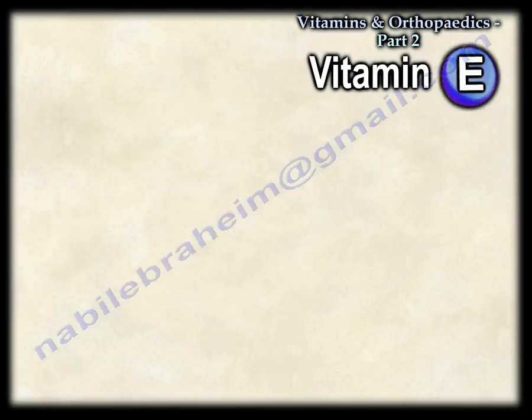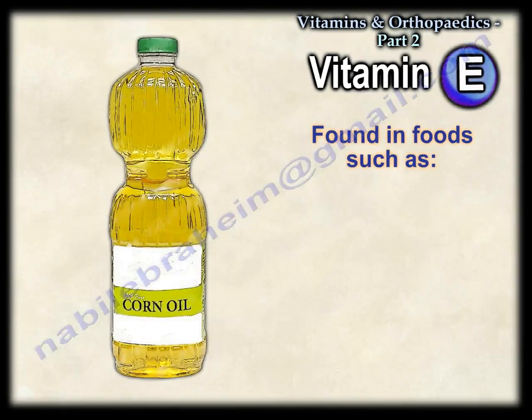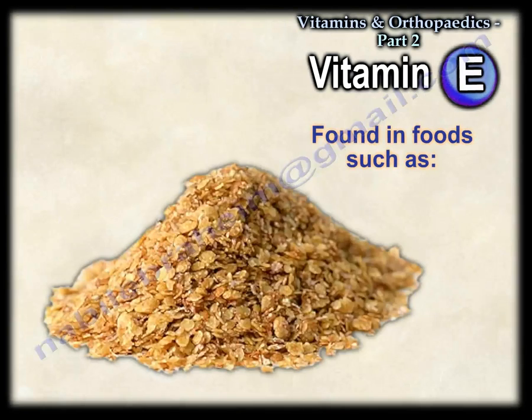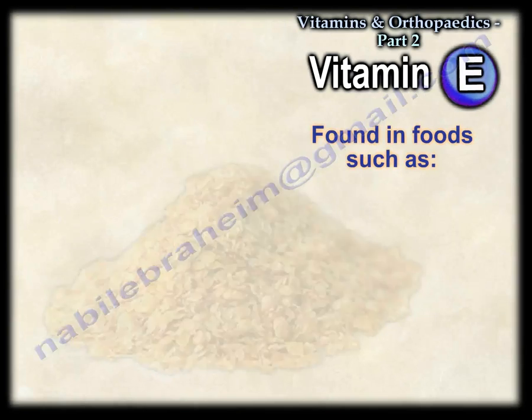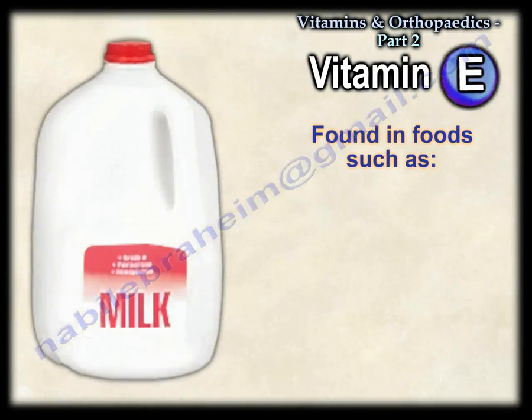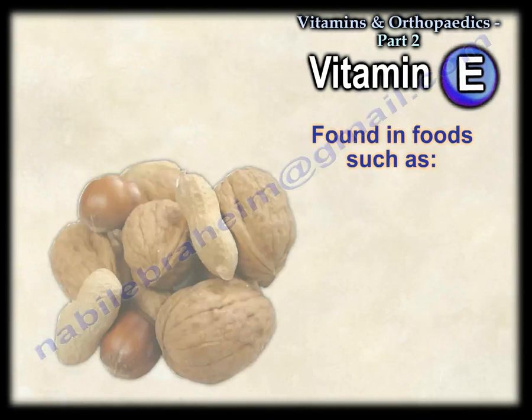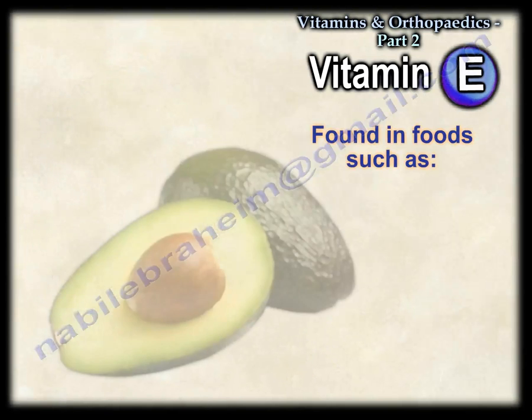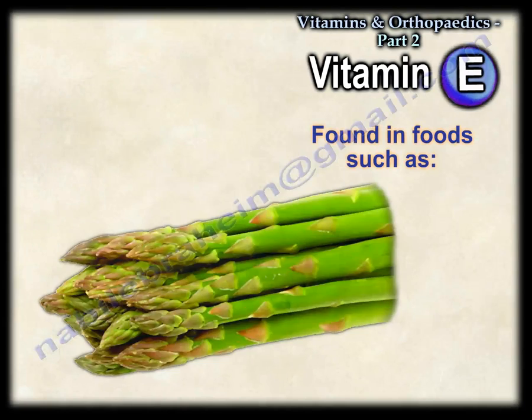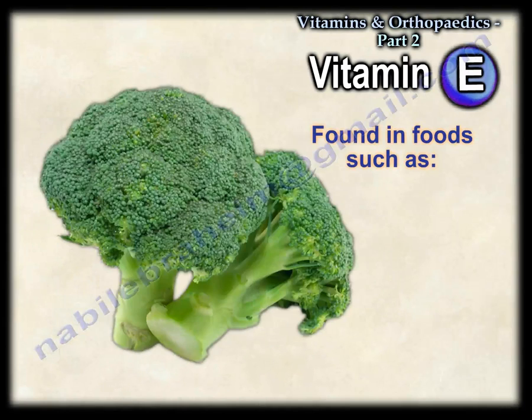Vitamin E is found in corn oil, wheat germ, sunflower oil, milk, nuts, avocado, asparagus, and broccoli.